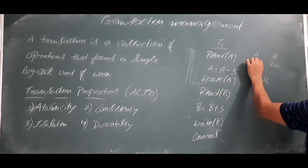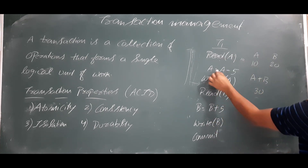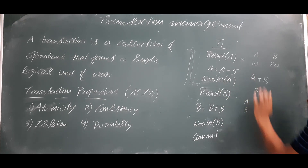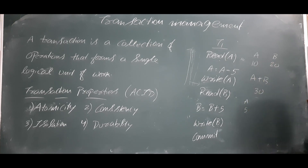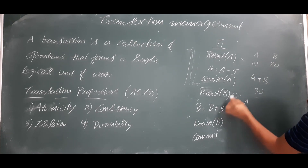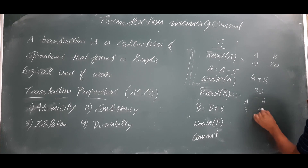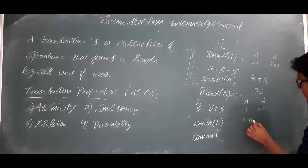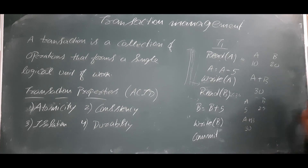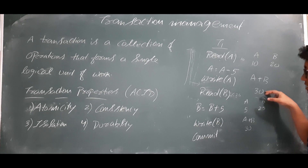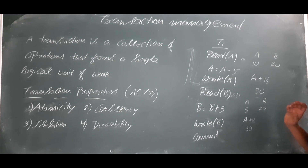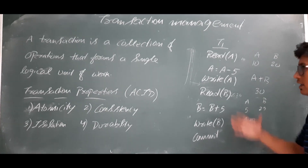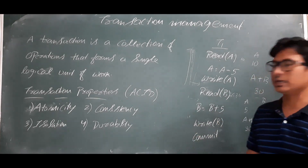Read A gives value 10. A equals A minus 5, so A becomes 5. We save it. Read B gives value 20. B equals B plus 5, so B becomes 25. Now A plus B equals 30. Before executing the transaction A plus B was 30, and after executing it A plus B is still 30, so this is a consistent transaction.